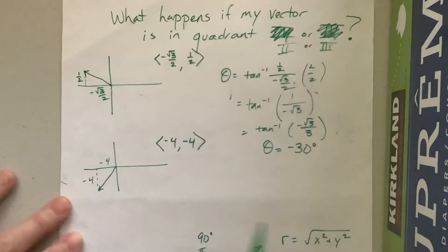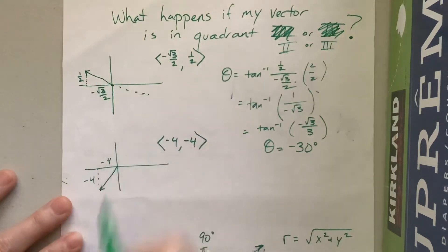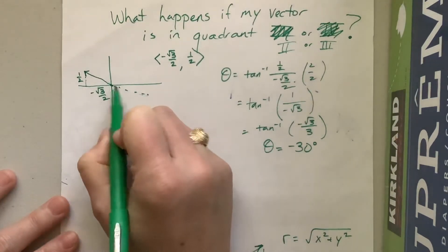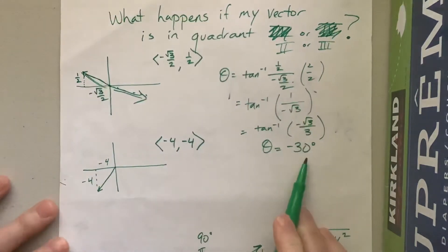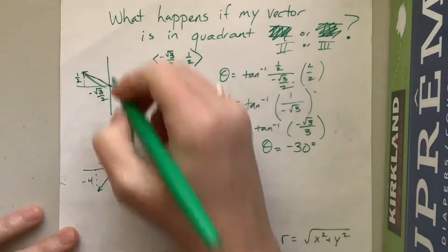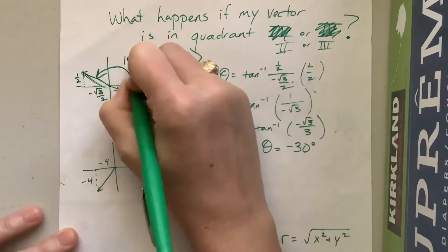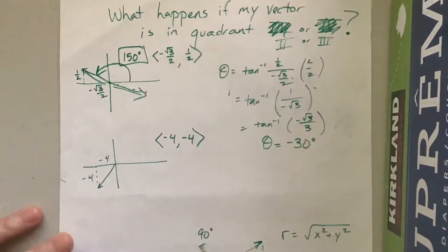Well, negative 30 degrees is here. That's not the angle, that's not the direction that this vector is going. The vector is going in the opposite direction of that. So we need to add 180. So this angle theta right here is 150 degrees.